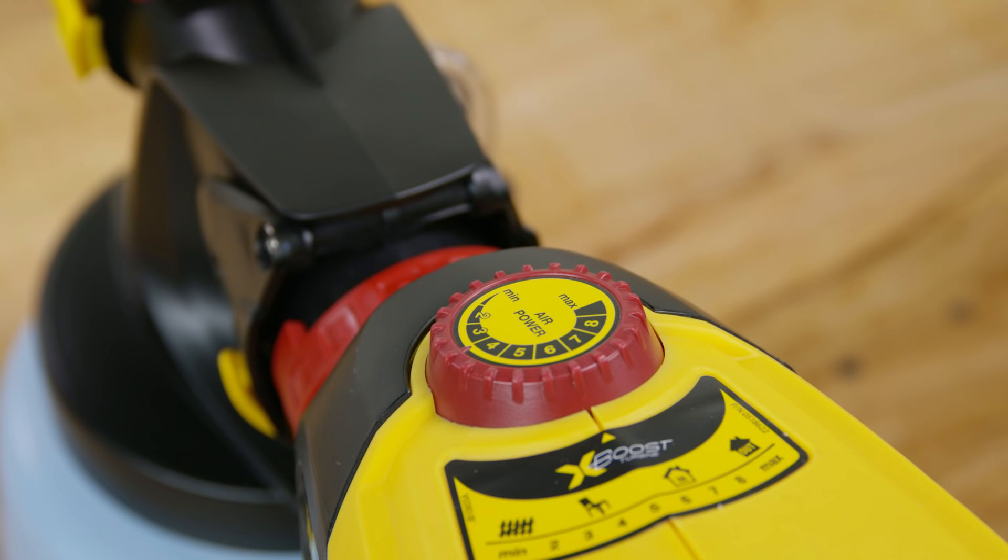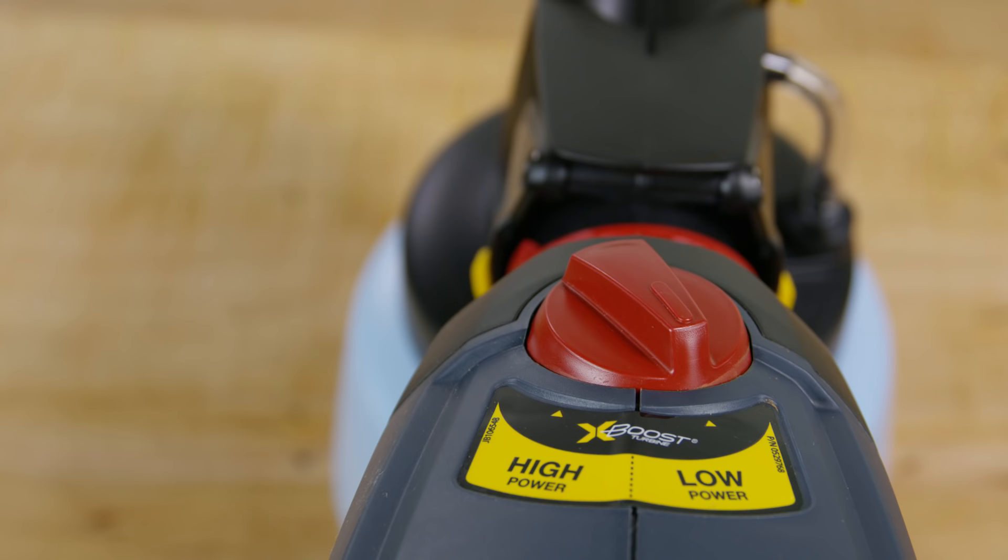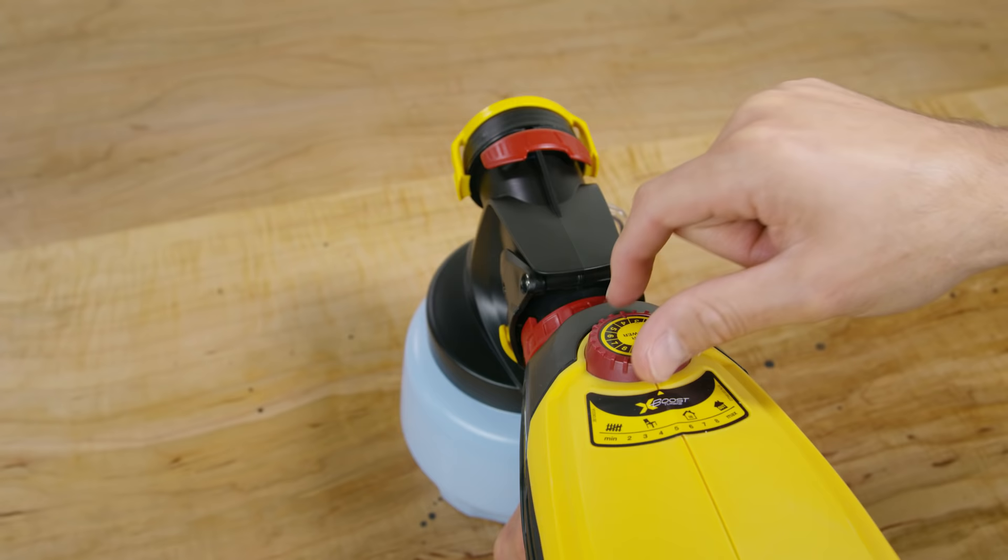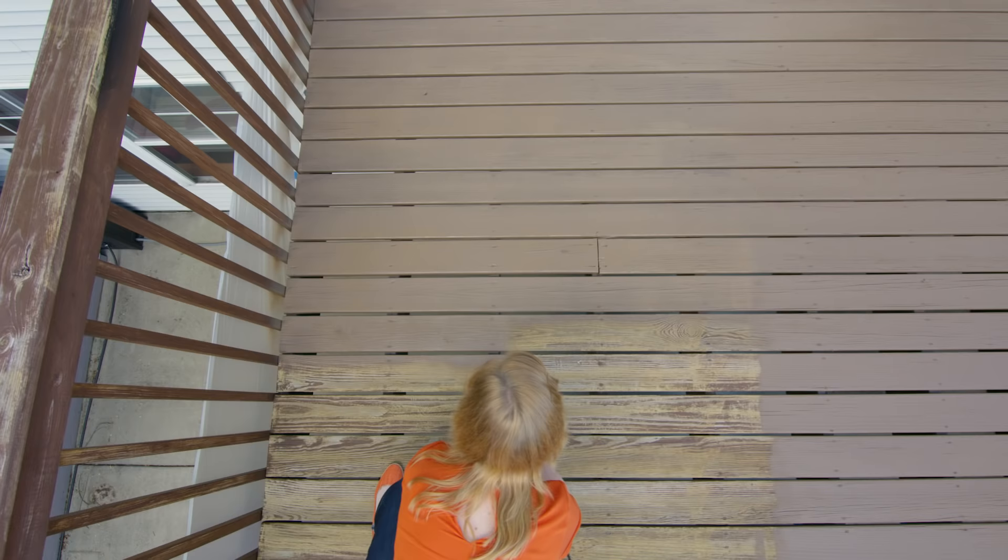The variable speed X boost power dial controls air power. You'll see that the 2000 comes with two settings, low and high. The 3000 offers variable power settings.